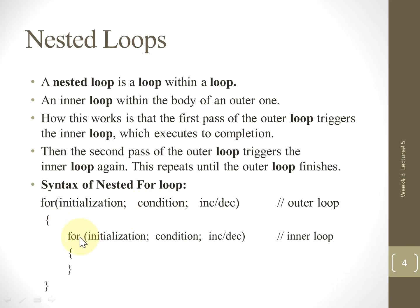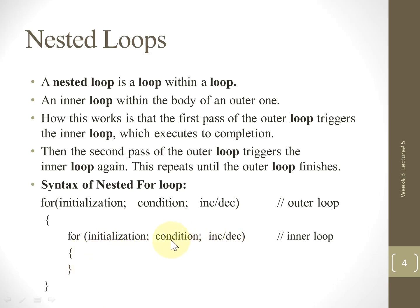After the condition, the control shifts to the body of the outer loop. Within the outer loop we have an inner loop. The inner loop will be initialized, then the condition will be checked. Once the condition is true, it will come to the body of the inner loop. When the body is executed, the control goes to the increment or decrement of the loop.